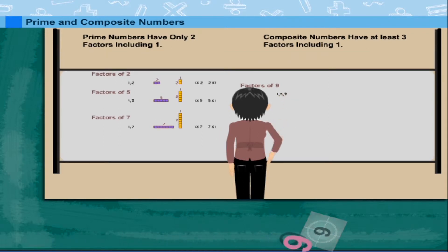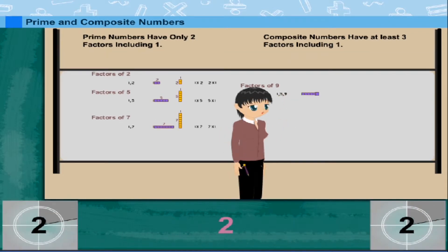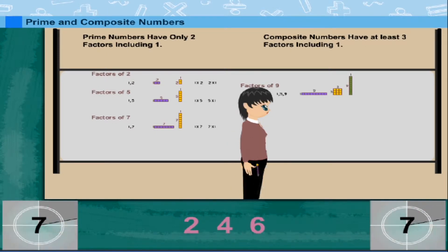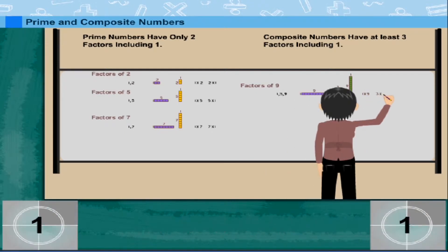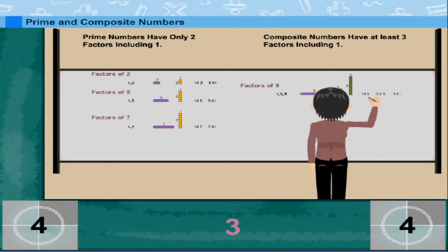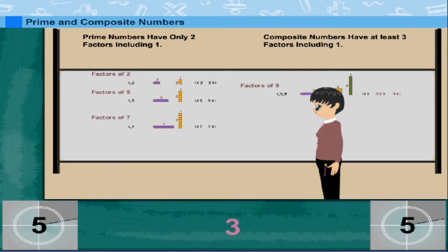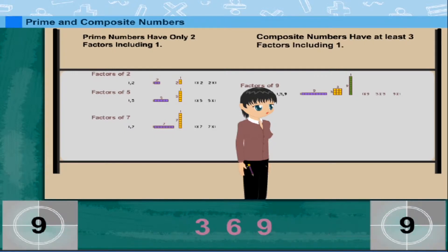Nancy now writes the factors of 9. These are 1, 3, and 9. This is not a prime number, but is called a composite number.